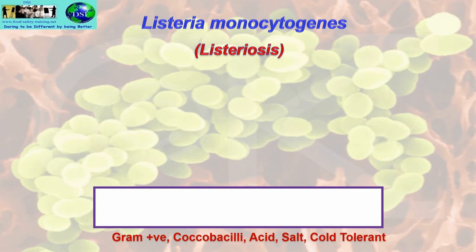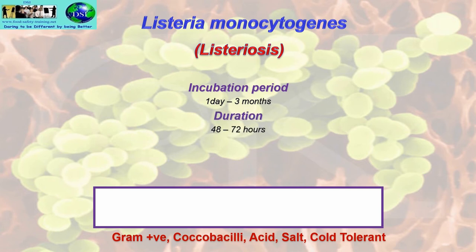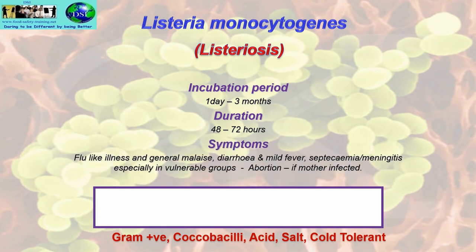Listeria — specifically Listeria monocytogenes — gives rise to Listeriosis. The incubation period is 1 day to 3 months. Duration of illness is 48 to 72 hours. Symptoms include flu-like illness and general malaise, diarrhoea and mild fever, septicaemia and meningitis especially in vulnerable groups, and abortion is possible if a pregnant mother is infected.